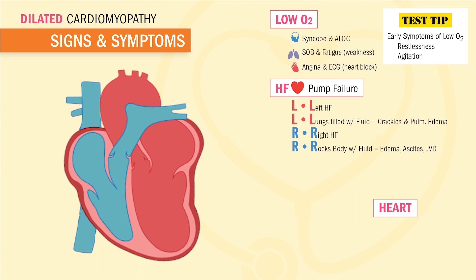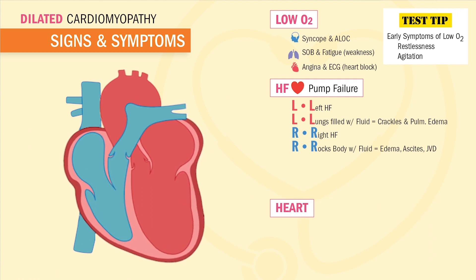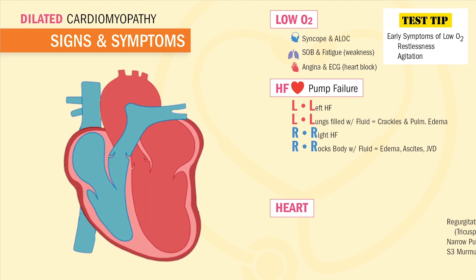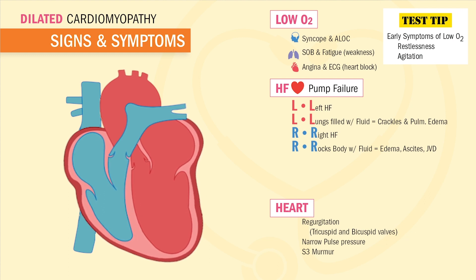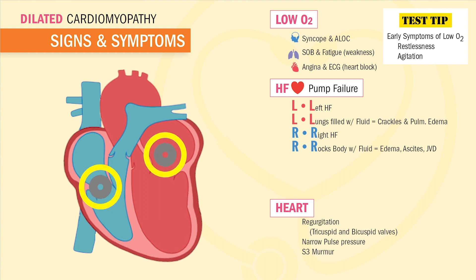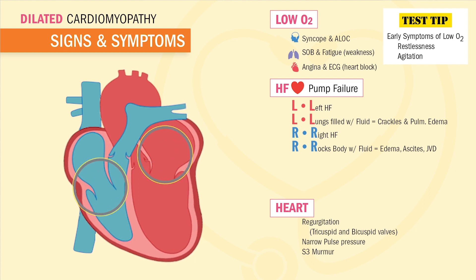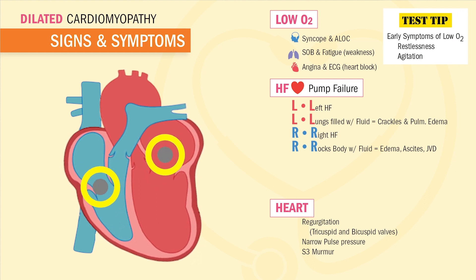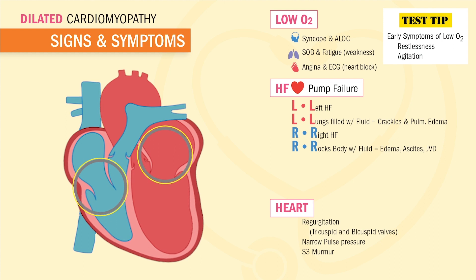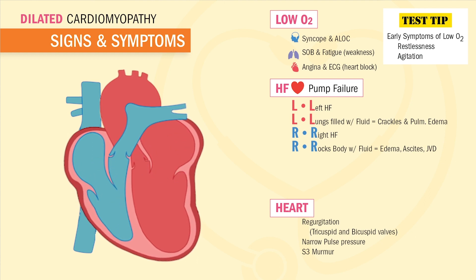In the distended heart of dilated cardiomyopathy, we also see regurgitation in the bicuspid and tricuspid valves. Since the valves are loose from this distension, they don't close tight enough. Regurgitation means a return of blood into the previous chambers — in other words, the blood isn't pumping forward.